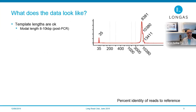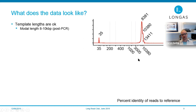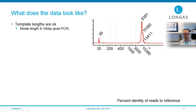Looking at the template lengths at the end of the chemistry process on a bioanalyzer — which is at the upper limit of what a bioanalyzer can resolve — we see a nice peak around 8.5 kilobase pairs, which is in the middle of the size-selected range, with a tail that goes out past 10 kb. Template lengths are as expected after all the PCR.